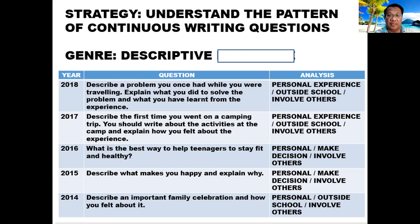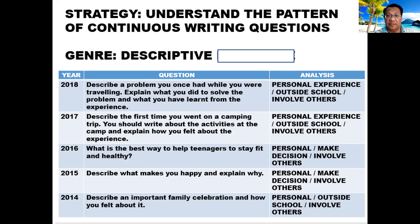For 2017: describe the first time you went on a camping trip. Again it's your personal experience, and camping is done outside school. You should write about the activities at the camp and explain how you felt about the experience. Definitely, to describe this camping experience you also need to write about others, which brings us to another keyword: involves others.